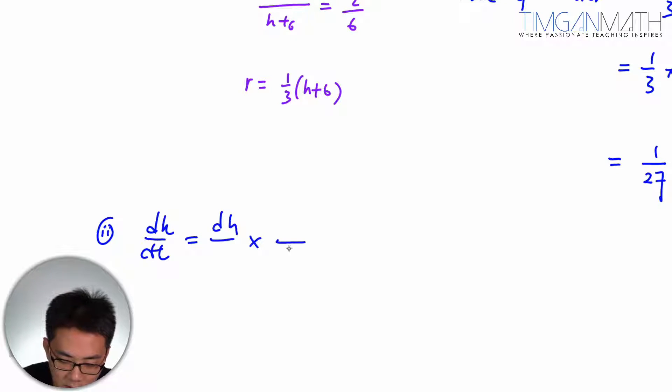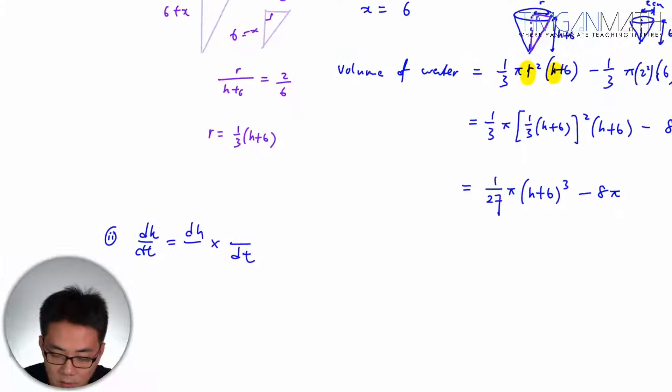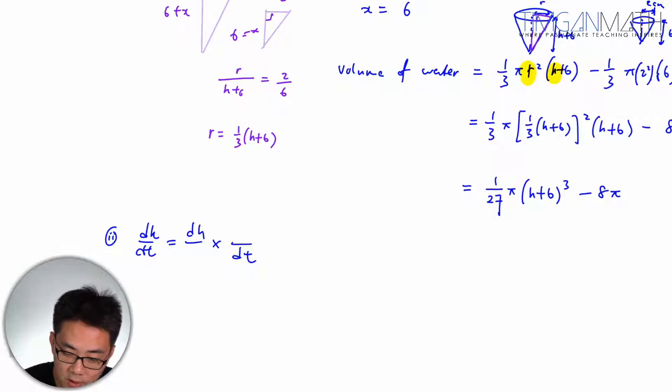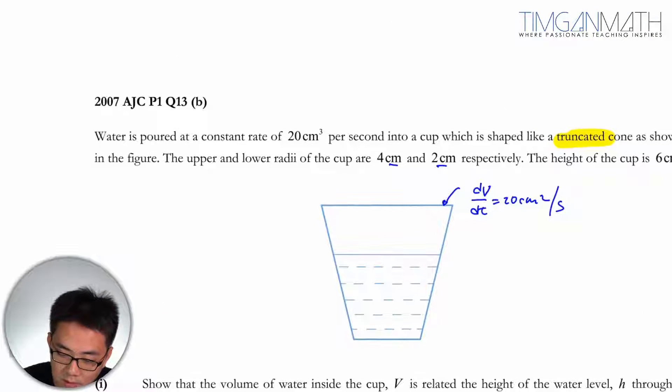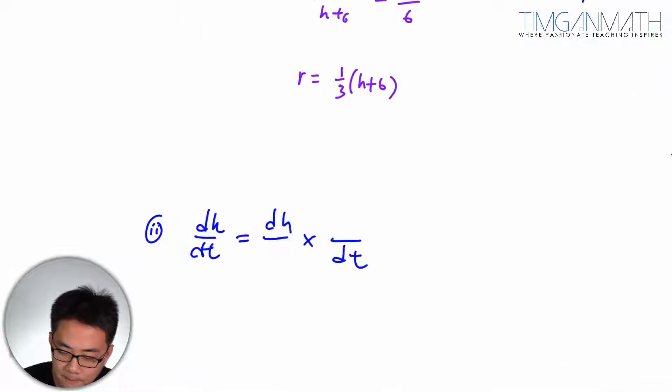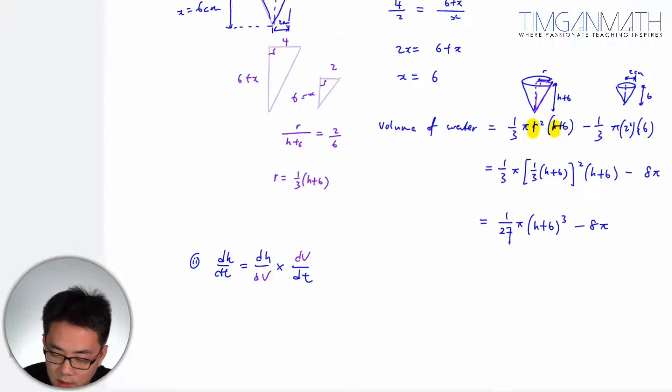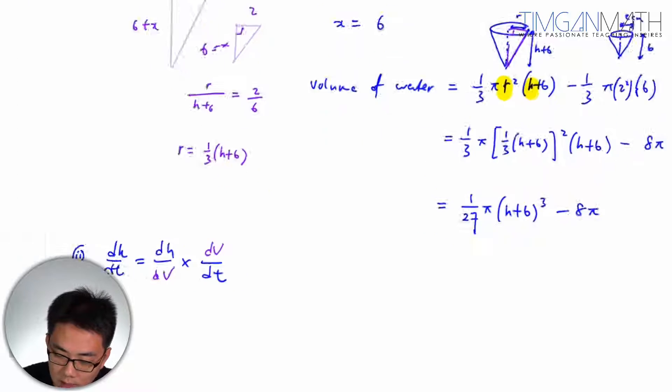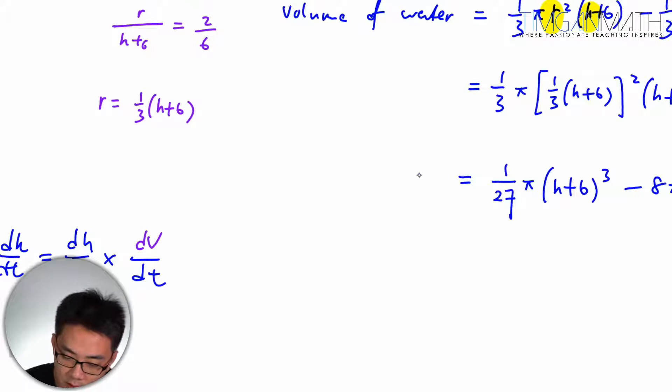What I usually tell students is just use chain rule, then fill up the slots. What you need is dV. This is dV/dt, which is volume of water. So we need to find dV/dh.